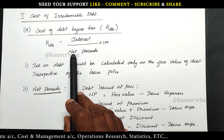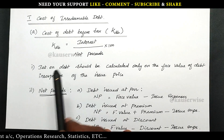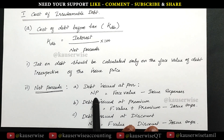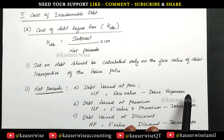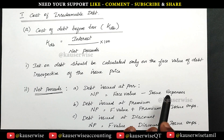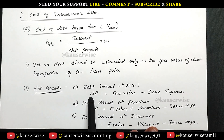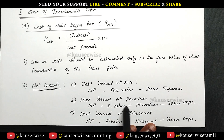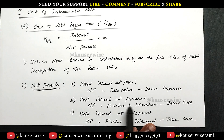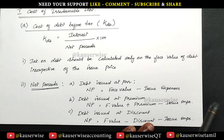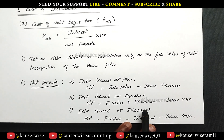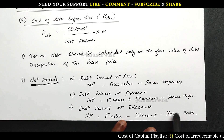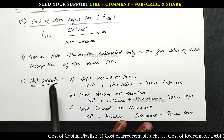The next component is net proceeds. You have to calculate two things: number one, interest; number two, net proceeds. If debt is issued at par, net proceeds equals face value minus issue expenses. If debt is issued at premium, net proceeds equals face value plus premium minus issue expenses. If debt is issued at discount, net proceeds equals face value minus discount minus issue expenses. These are the three possibilities to find out net proceeds.